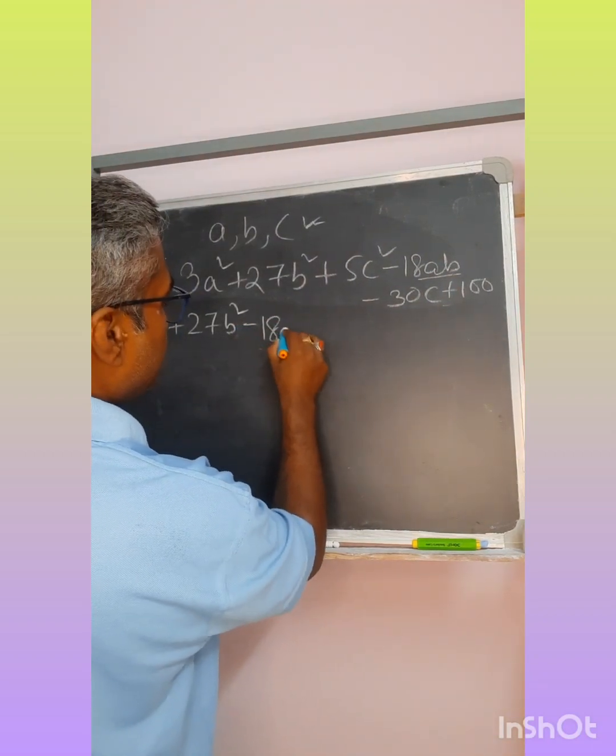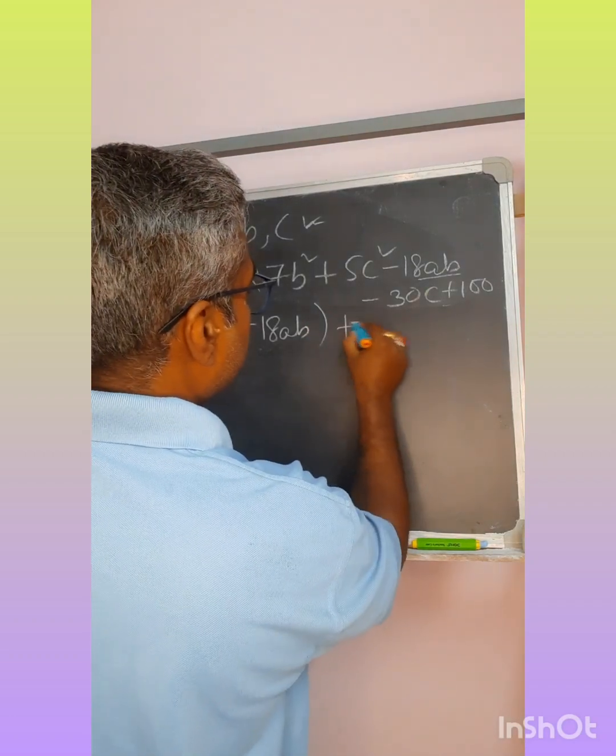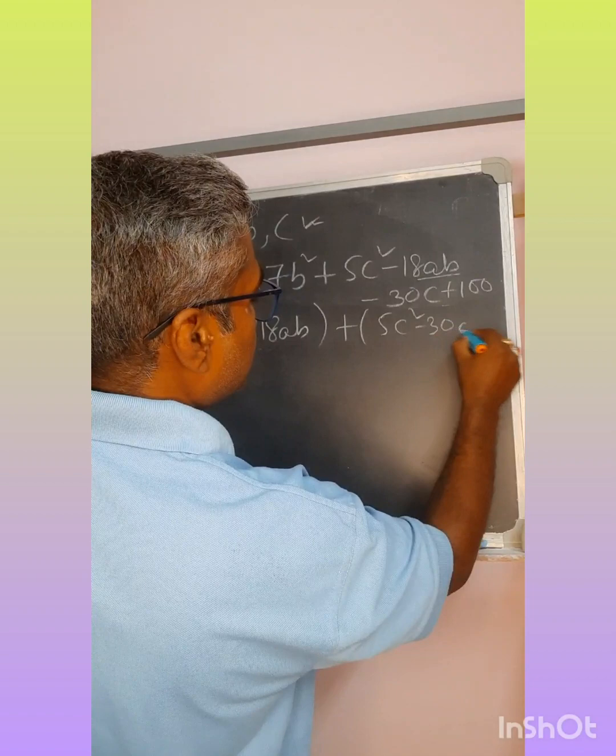I have to bring B and A terms together in one single bracket. The remaining one is 5C² - 30C + 100.